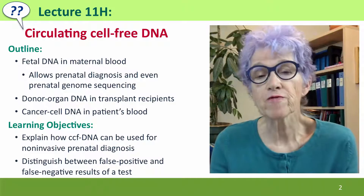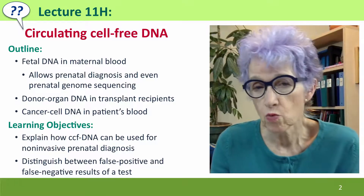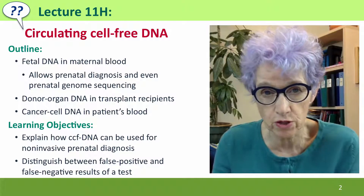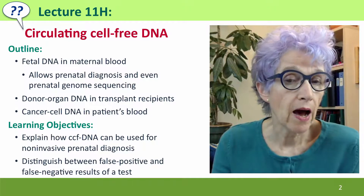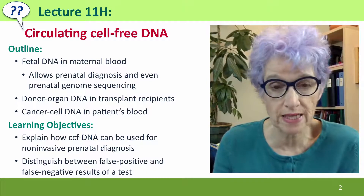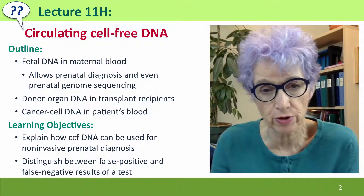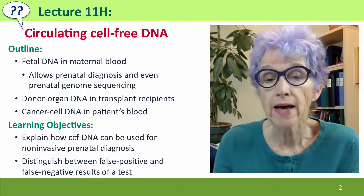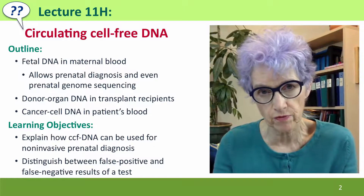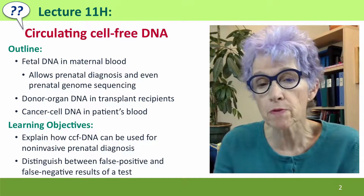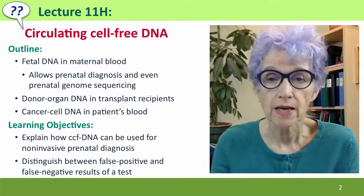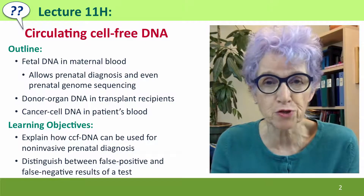One is fetal DNA in maternal blood, which can be very useful for prenatal diagnosis. We'll talk about how transplanted organs release DNA into the recipient's circulation, and how that DNA can be used to monitor the progress of the transplant. And we'll talk about the possibility that the DNA of cancer cells can be used to optimize treatment.